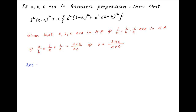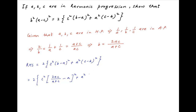Now consider the right hand side of the equation in the problem statement, which is two times [c² × (b − a)² + a² × (c − b)²]. Substituting the value of b obtained above, this equals two times [c² × (2ac/(a+c) − a)² + a² × (c − 2ac/(a+c))²]. Taking a common from the first term gives a² outside the brackets, and taking c common from the second term gives c² outside the bracket.